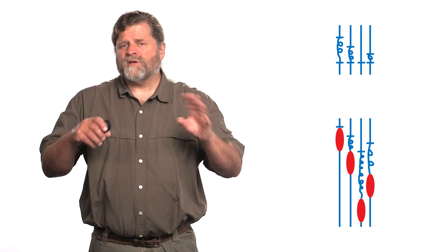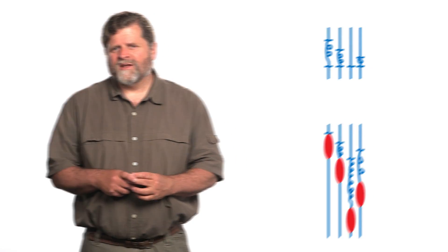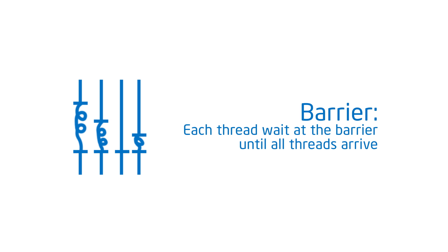The first one is called barrier synchronization. It defines a point in the program and says, all you threads, stop — wait here until everyone arrives, then everyone can go on. That's a barrier.